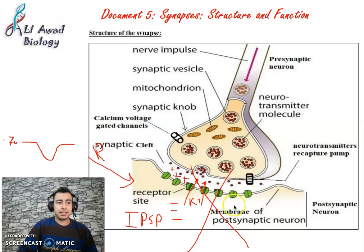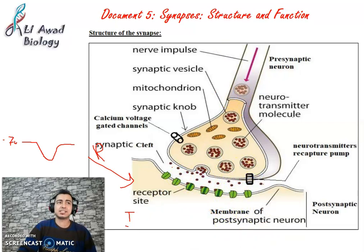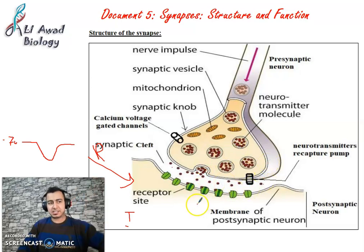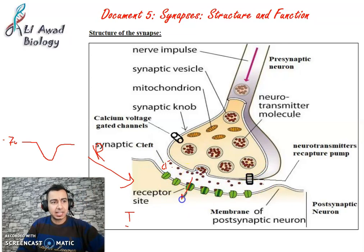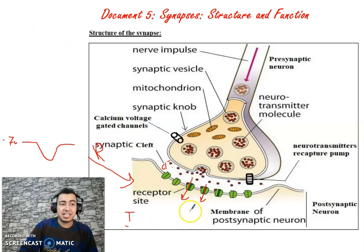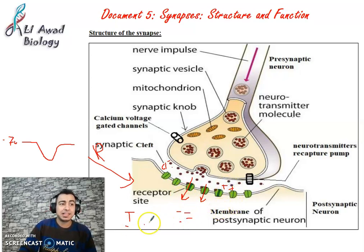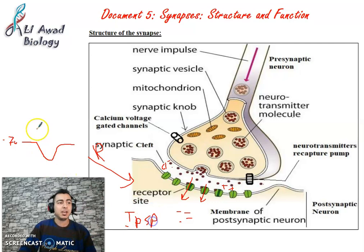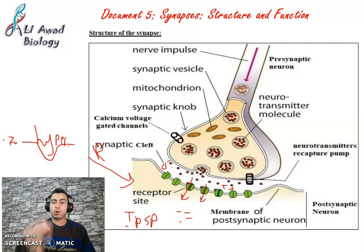Another example: if the chemical-dependent channels are Cl- channels, Cl- is found more outside the cell. As soon as these channels open, Cl- moves from outside to inside according to diffusion, rendering the intracellular medium more negative and the extracellular medium more positive. This also leads to IPSP, or hyperpolarization.